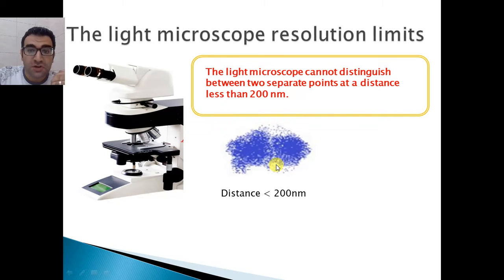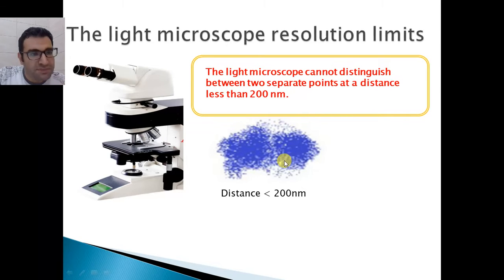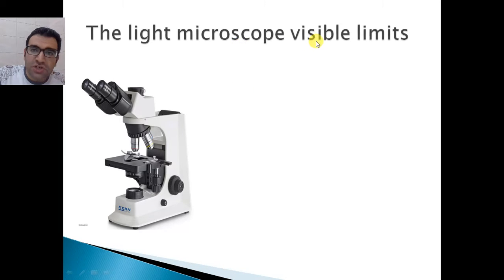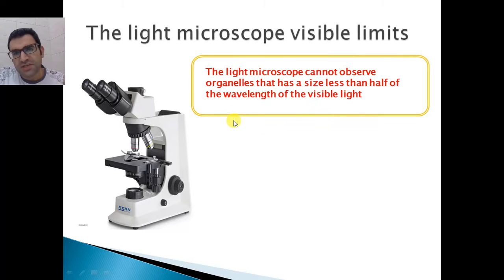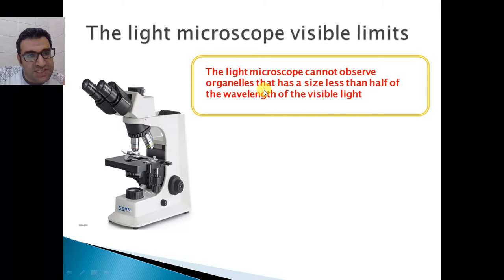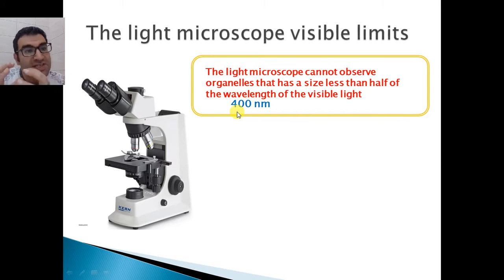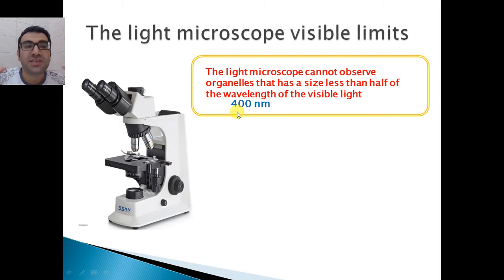The light microscope has another limitation, which is a visible limitation. This means that the light microscope cannot observe organelles — structures inside the cell — that have a size less than half the wavelength of visible light. The wavelength of visible light is 400 nanometers, so half of that is 200 nanometers. Therefore, every organelle inside the cell that has a size less than 200 nanometers cannot be seen under the light microscope.